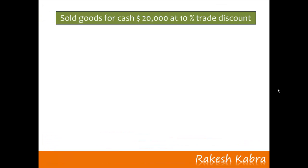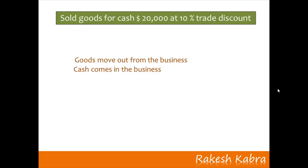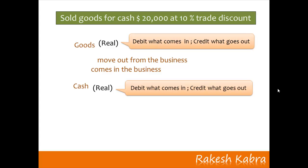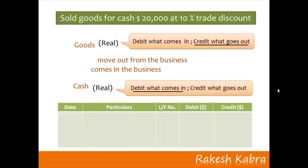To record this transaction, we identify the accounts affected: goods account and cash account. Both goods and cash belong to the real category. The rule for real accounts is: debit what comes in, credit what goes out. As goods move out from the business, goods account will be credited. As cash comes in, cash account will be debited.